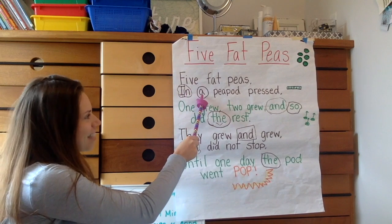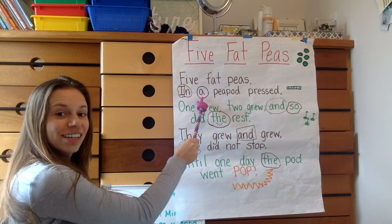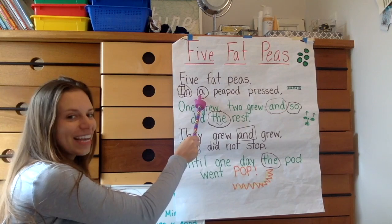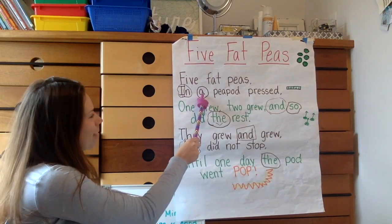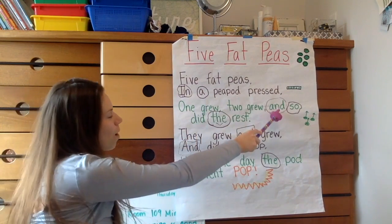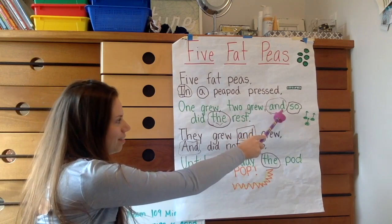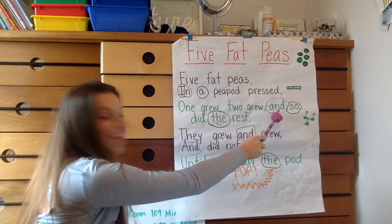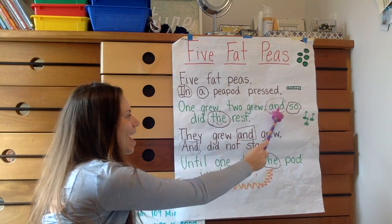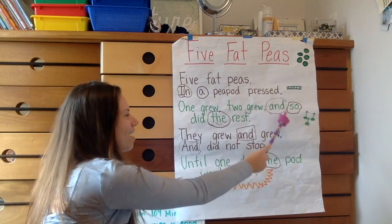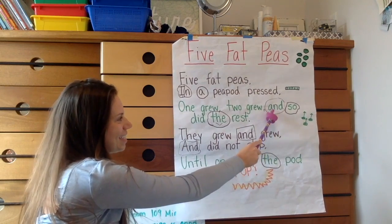What sight word is that? That's right, it's A. A spells A. What word is that? That's right, A-N-D spells *and*, and.